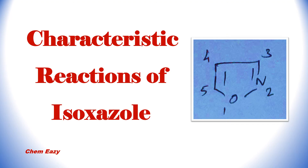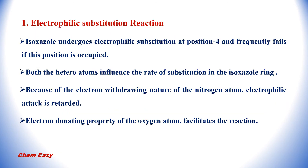Now let us go to the characteristic reactions of Isoxazole. Here you can see the structure of Isoxazole with numbering — position 1 is where the oxygen atom is present, position 2 is the nitrogen atom, and positions 3, 4, and 5 follow. The first reaction is electrophilic substitution. Isoxazole undergoes electrophilic substitution at position 4. If that position is already occupied by a substituent, electrophilic substitution fails. Both heteroatoms influence the rate: the electron-withdrawing nitrogen retards electrophilic attack, while the electron-donating oxygen facilitates the reaction.